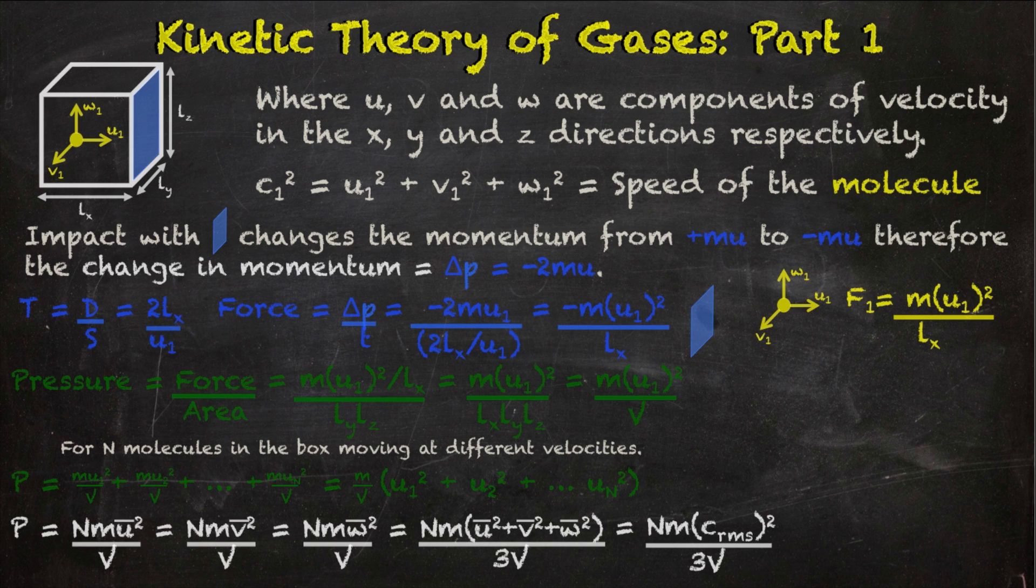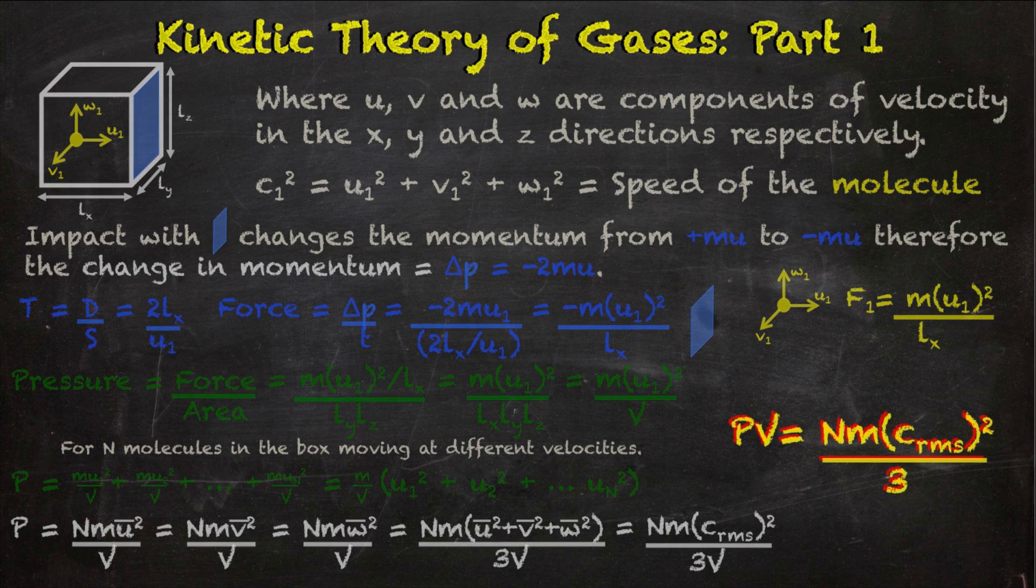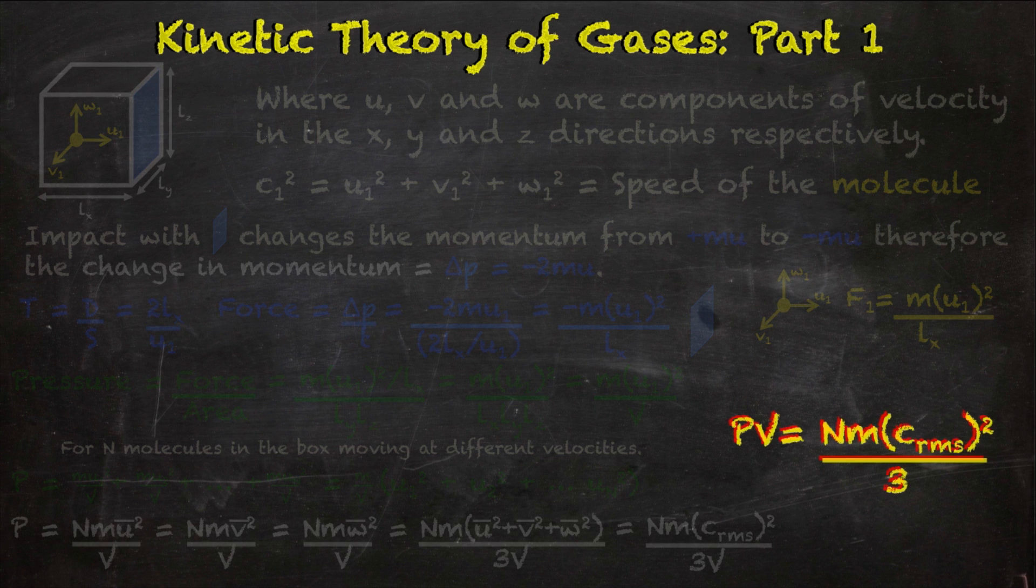But using what we've just said, and the equation for C squared at the top of the slide, you can gain the final equation, PV equals NM multiplied by CRMS squared over 3. I can't believe you got to read the final equation. I'm so jealous. Oh, there's another bit.